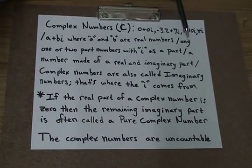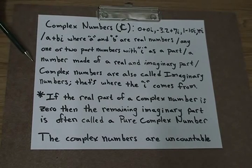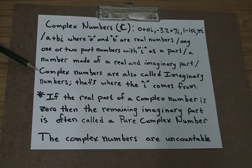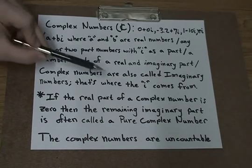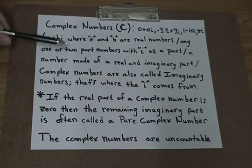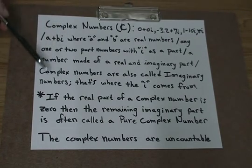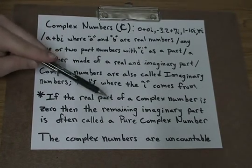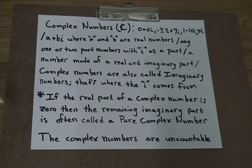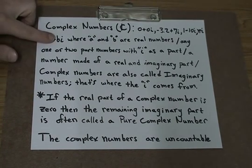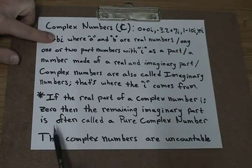The mathematical definition is a number made of a real and imaginary part. Complex numbers are also called imaginary numbers — that's where the i comes from. As a note, there is a subgroup of complex numbers: if the real part of the complex number is 0, then it would just be bi, and that remaining imaginary part is often called a pure complex number.